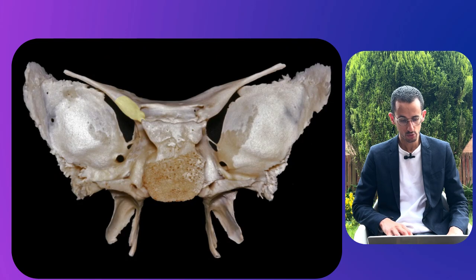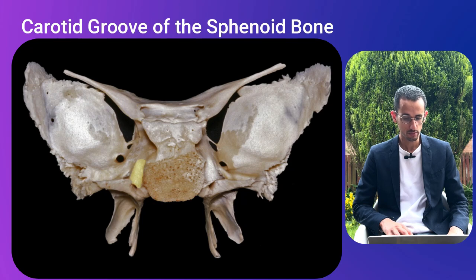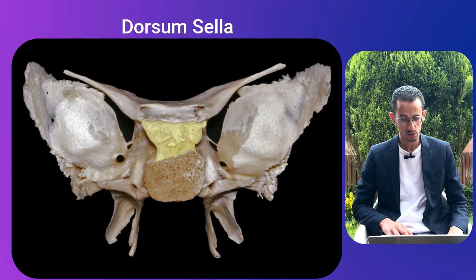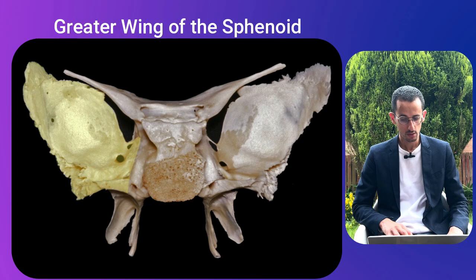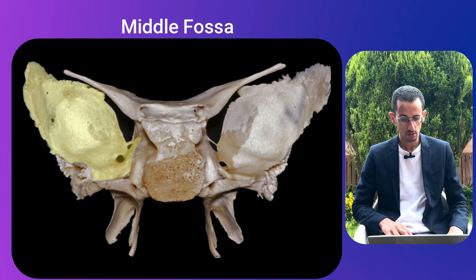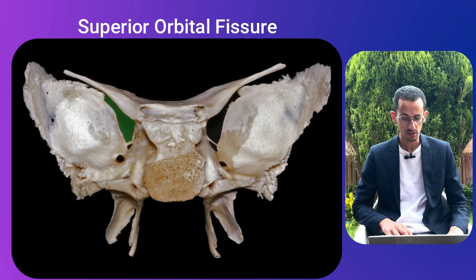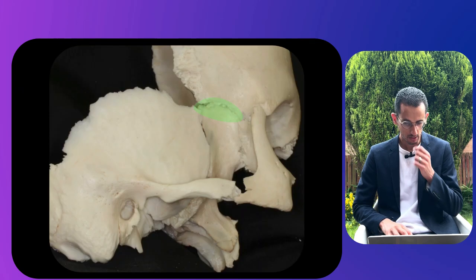Another view of the sphenoid bone shows the interoclinoid process, the carotid groove of the sphenoid bone, the dorsum sellae, foramen rotundum, the greater wing, the lesser wing, the middle fossa, the occipital-sphenoid suture, the superior orbital fissure, and the Vidian canal.